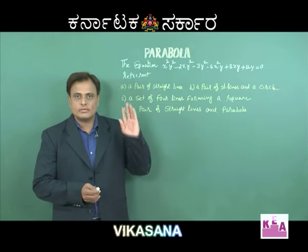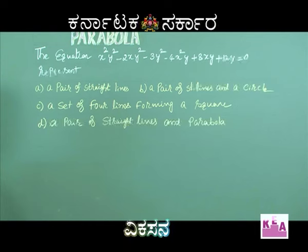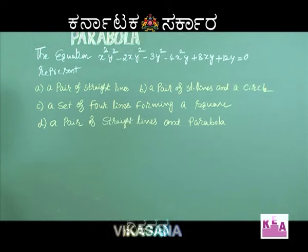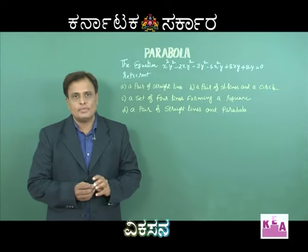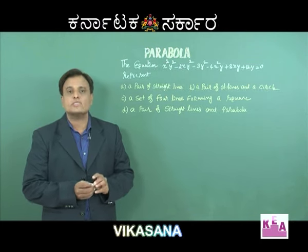Let us move on to the next example. Read the question: the equation x²y² - 2xy² - 3y² - 4x²y + 8xy + 12y = 0 — what does this equation represent? Options are: (a) a pair of straight lines, (b) a pair of straight lines and a circle, (c) a set of 4 lines forming a square, (d) a pair of straight lines and a parabola. It is a very tricky example.